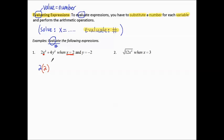Plus 4y². Instead of the y, we're going to put what they give us for y, which is negative 2, and then squared.